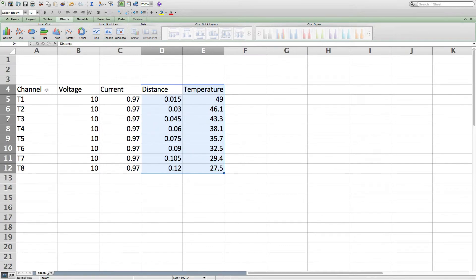So here's an example of the data you might be recording in the lab. You're going to have eight data points, there's going to be eight channels, T1 through T8. You're going to be recording the voltage at each point, but the voltage is going to stay the same at 10 the entire time. You're going to record the current at each point, but the current is going to be pretty close to one the entire time, so these two are constant.